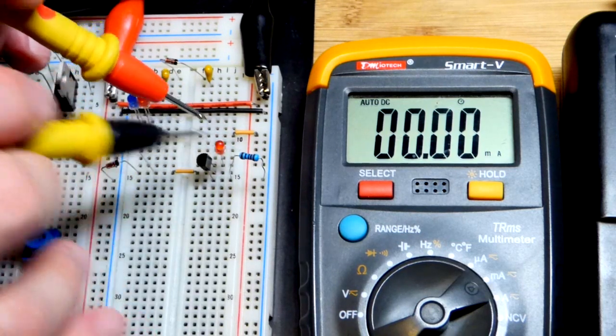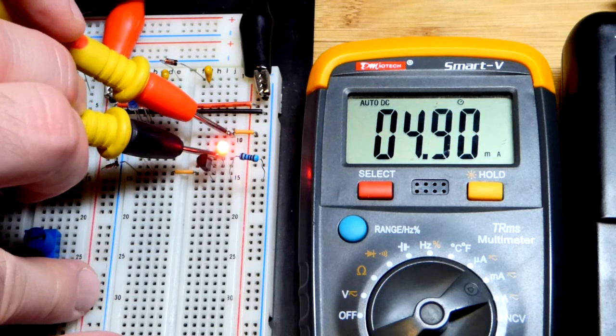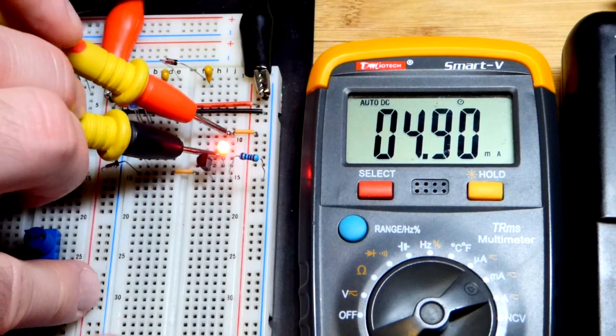Now we add an LED. That takes 2 more volts to conduct, and so we don't have enough now. Okay we are actually doing alright right there. It's still about 5.